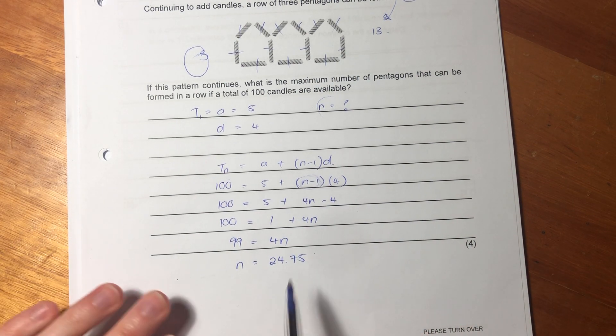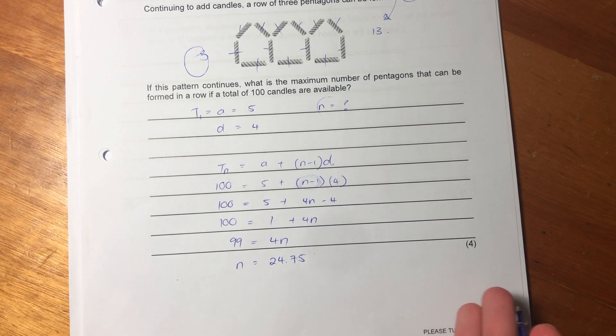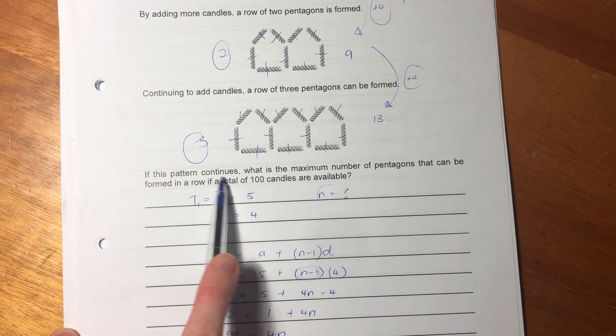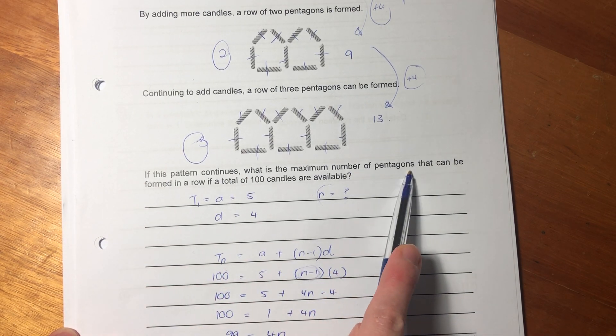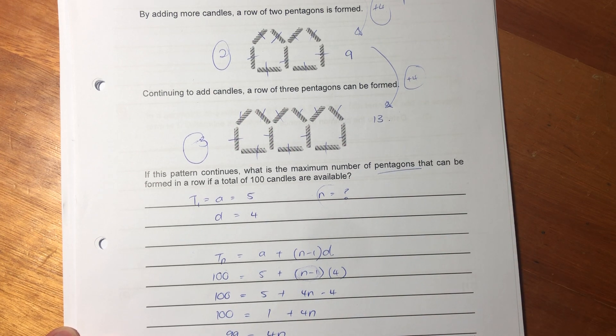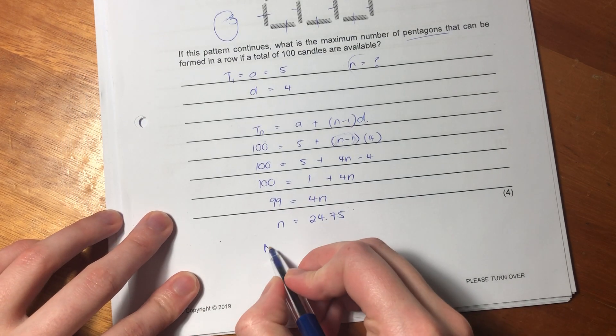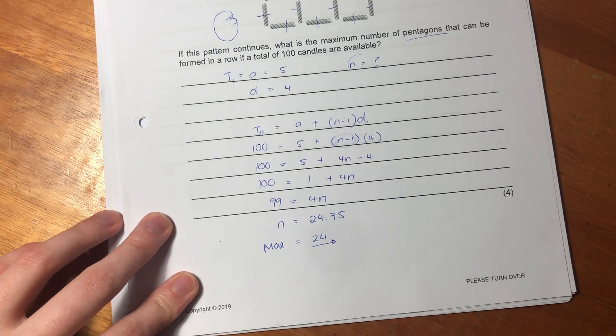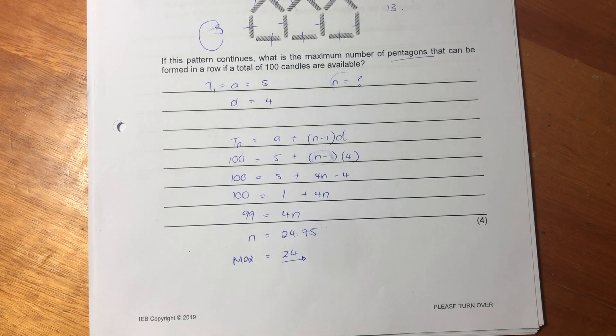So let's just see whether we've answered our question because we know that you can't have a term, like a term in between two whole numbers. So either that has to be 24 or 25. So let's just read what it says. If this pattern continues, what is the maximum number of pentagons that can be formed in a row if a total of 100 candles are available. So the max would be 24. You shouldn't round it up to 25 in this case because you would actually then need additional candles. It's saying you only have 100 candles. How many of these pentagons can you make?